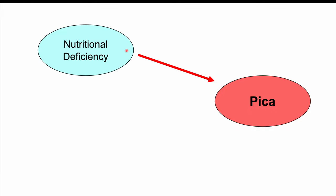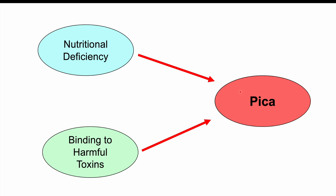The reasons why pica occurs are not entirely understood. It's been proposed that it may be due to nutritional deficiencies, and certain deficiencies are more likely in patients with pica. However, there are cases where patients experiencing pica don't have nutritional deficiencies. Another hypothesis is that some substances these patients eat may be helpful in binding to harmful toxins — substances like eggshells, paper, or clay may bind to harmful environmental toxins and help them gastrointestinally.